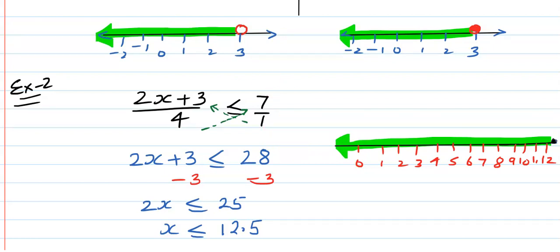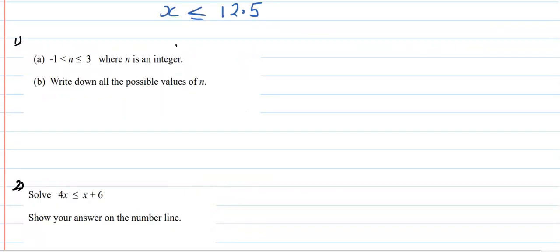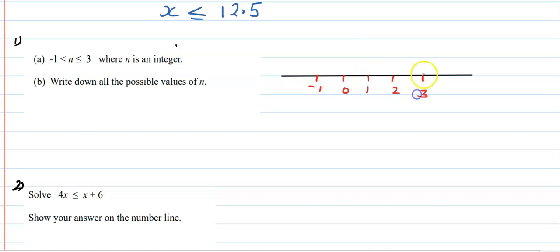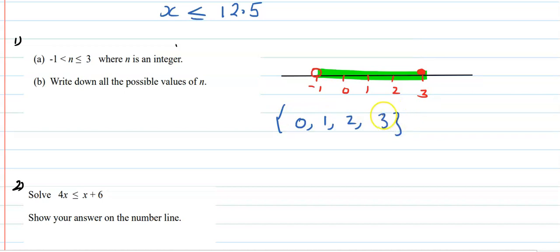Now I am going to give you some questions to try. Here are two questions — please check your answers. Here is question 1: on the number line, where n is an integer, 3 is an included point and minus 1 is excluded. Join them. All the possible values of n will be 0, 1, 2, and 3.